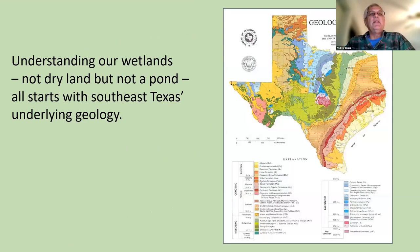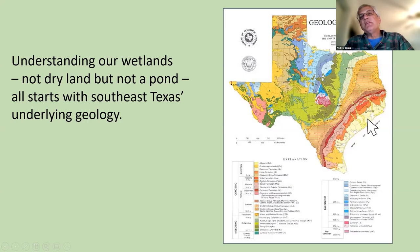Let's talk a little bit about wetlands. To understand our wetlands, you have to understand the geology of Texas. Here's a map of Texas — you can see Houston in the lower right-hand corner, the Gulf of Mexico, Mexico, New Mexico, Oklahoma, and Louisiana. This is a geologic map showing the underlying surface geology of the state.